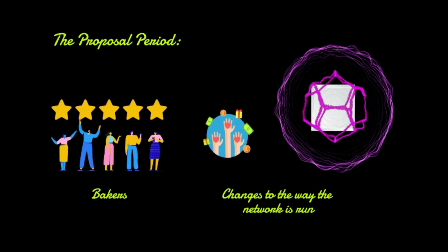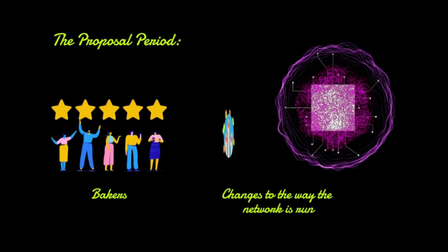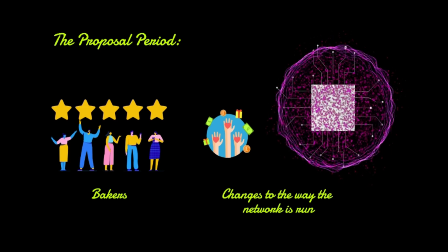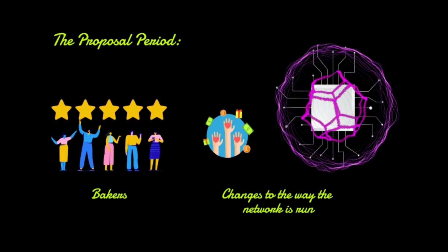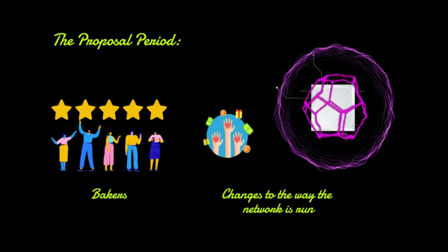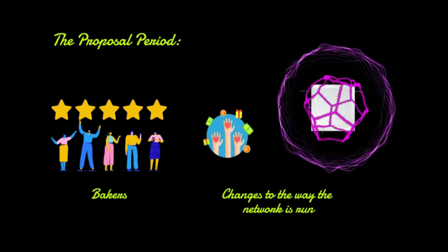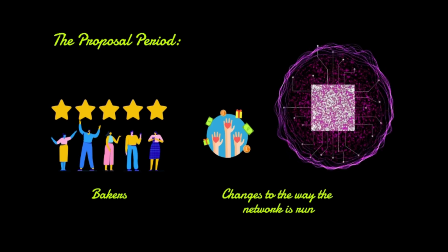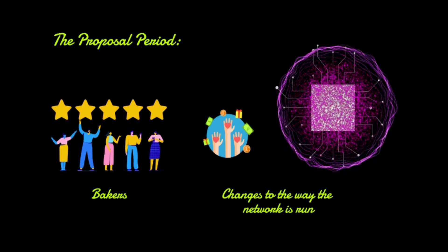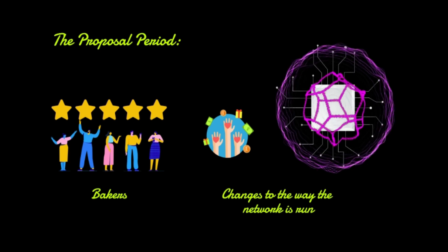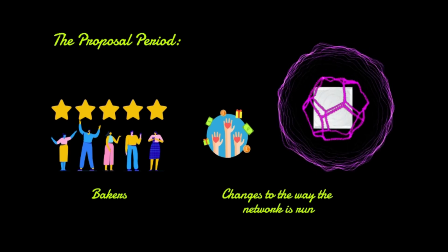When bakers vote, they are in fact voting on behalf of a larger community, and the value of their votes is directly proportional to the amount of coins the baker and their node hold at that time. This process consists of four unique voting periods, with each vote separated by 23 days. In the proposal period, any baker on the network can propose changes to the way the network is run.